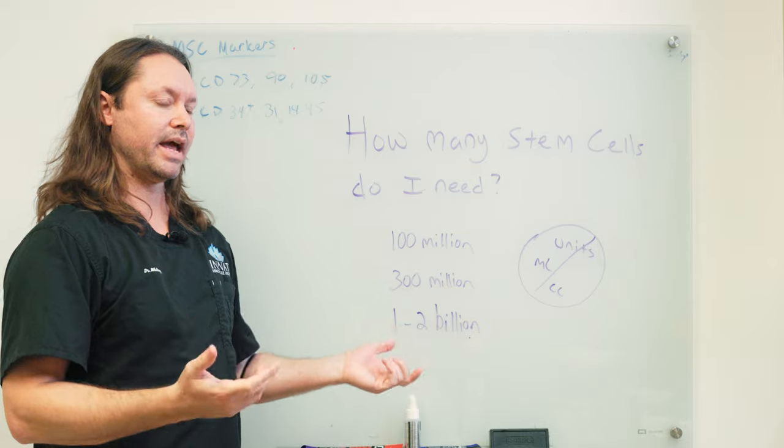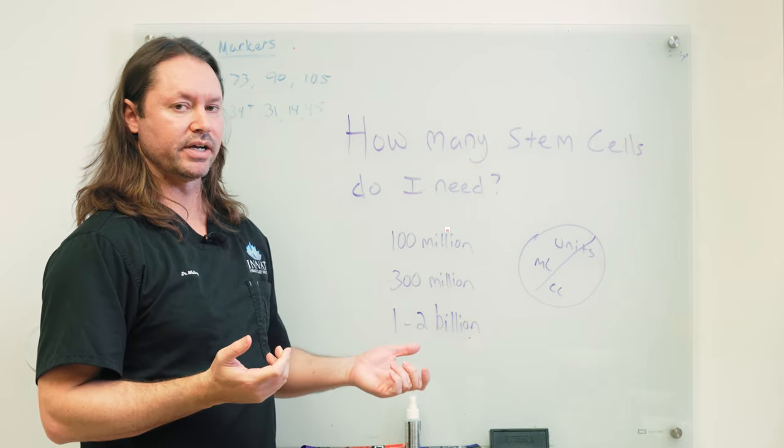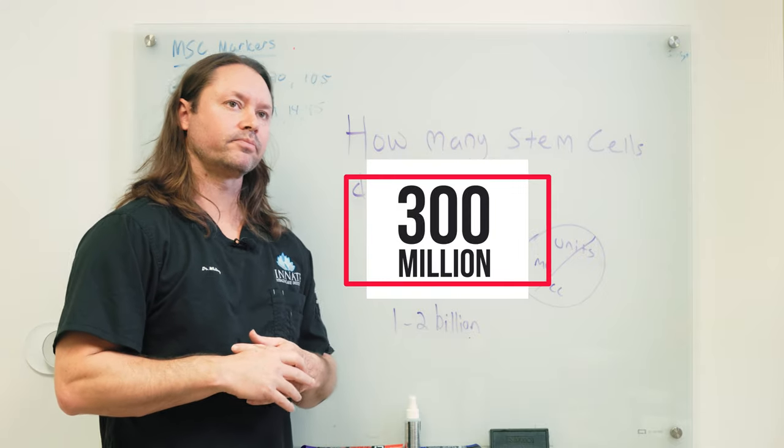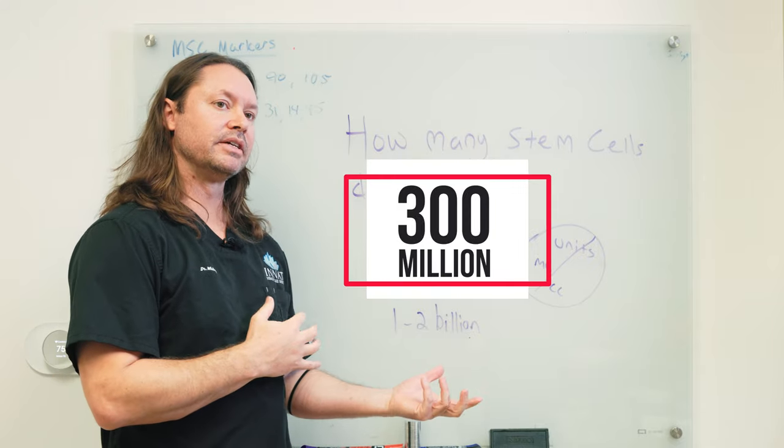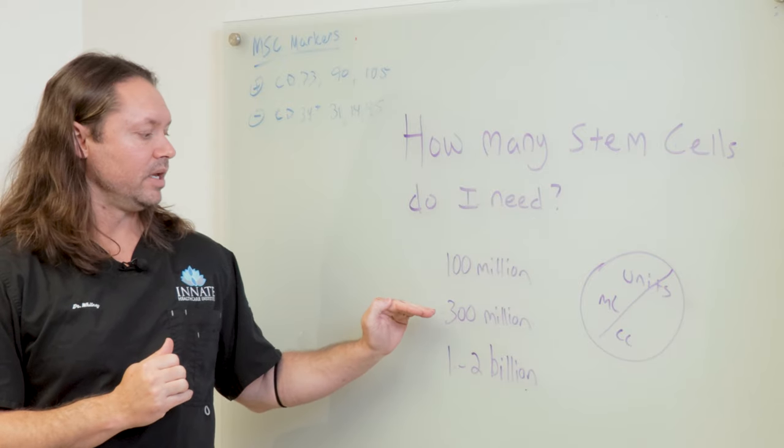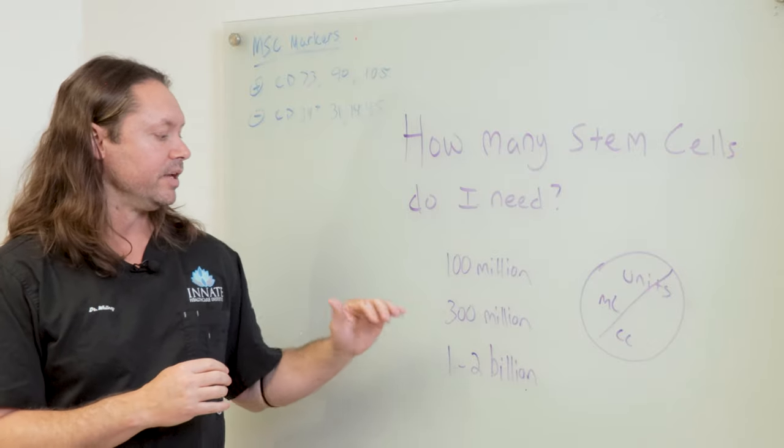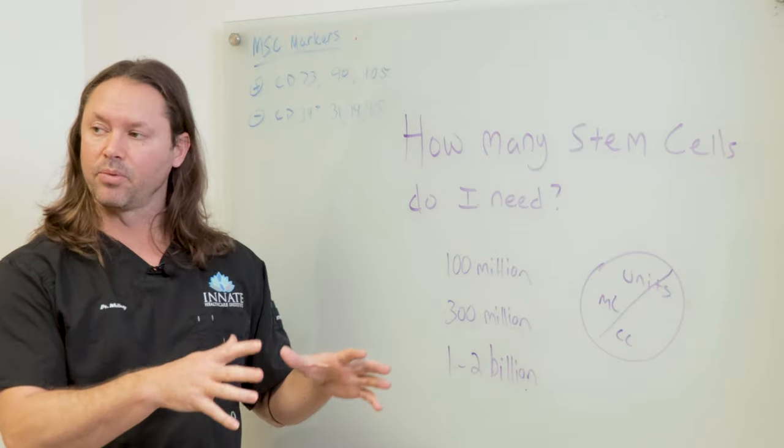But that surface area starts to get a lot bigger when you're working on a neck or low back. And so then we move up to something like 300 million cells. In children with autism, we tend to start somewhere around here. And we can dose these differently. We can break these doses up. It doesn't always have to be 300 million at once.